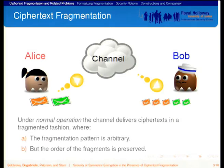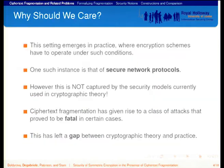What we assume about the channel is that under normal operation — that is, when there is no interference from the adversary — the fragmentation pattern can be arbitrary, but the order of the fragments is preserved. This is only for correctness. When we come to define security notions, we relax this second requirement: we don't care about the order of the fragments, so the adversary is able to change the pattern as he likes.